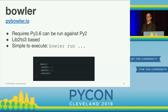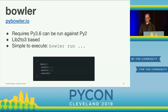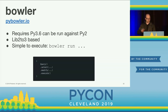Another tool is Bowler, which came from Facebook and is my current tool of choice for writing code transformations. It requires Python 3.6 but can run against Python 2 code. It's lib2to3-based — using a slight upstream fork called fissix. It has a much cleaner API: query, select, modify, execute. Query selects which files to process; select picks which code elements to modify; modify defines how to change them; and execute decides the output — show a diff, save it, or use interactive mode to approve each change individually.